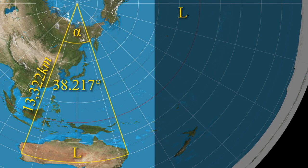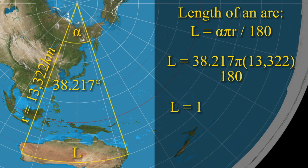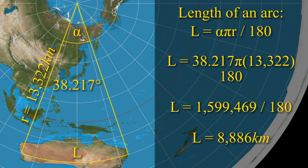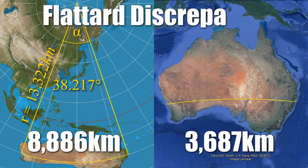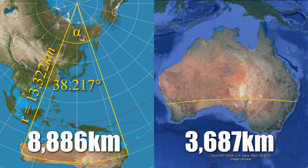The length of an arc on a circle subtended by an angle alpha is alpha × π × r ÷ 180. When we crunch the numbers we find that two points on the Flat Earth surface, 30 degrees south of the equator and separated by 38 degrees and 13 minutes, are 8,886 kilometres apart. This is 2.41 times greater than the real distance between our points near Red Rock and Lehmann. But Flat Earthers say that distances on land are the same on their giant space pizza as in real life — in this case 3,687 kilometres.